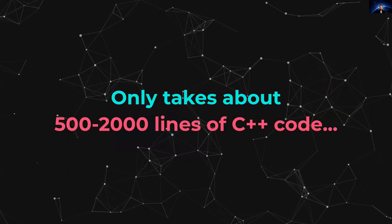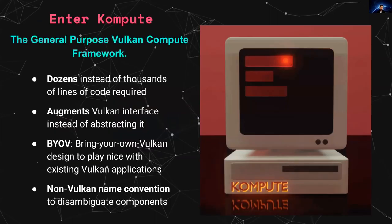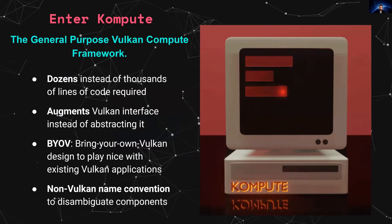Building the foundation code required to run a simple program in Vulkan only takes from 500 to 2,000 lines of C++ code. This is one of the key motivations for the Kompute framework. Kompute enables developers to get started interacting with the Vulkan SDK with dozens instead of thousands of lines of code.